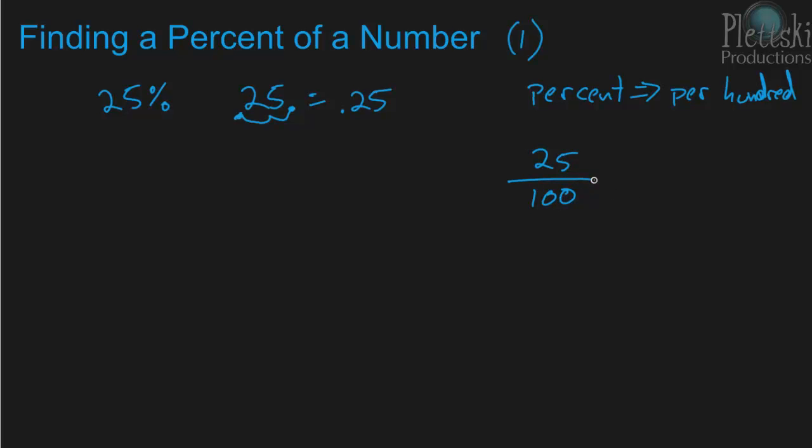Both 25 and 100 are divisible by 25. So if we divide the numerator by 25 and also divide the denominator by 25, we'll get 1 fourth. So 25% can be written as 0.25 or 25 hundredths, or it can also be written as 1 fourth.